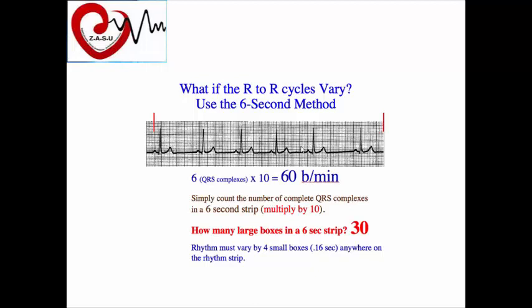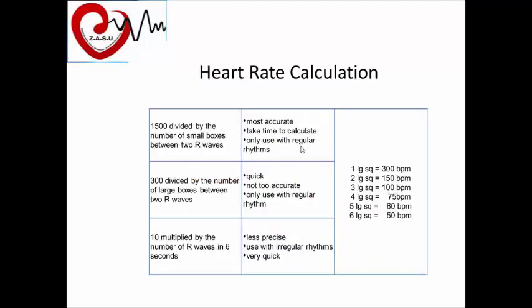So counting 30 big squares and noting how many QRS complexes are present, then multiplying by 10, gives the actual heart rate in irregular rhythm. As a quick reference for regular rhythms: 1 big square equals 300 beats per minute; 2 large squares equals 150 beats per minute, and so on.